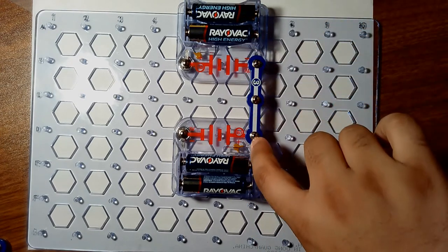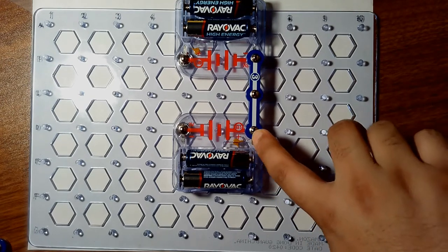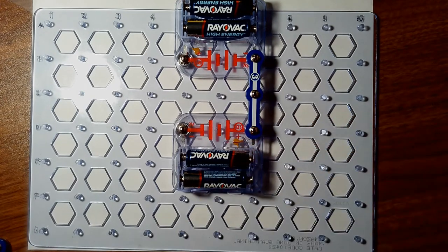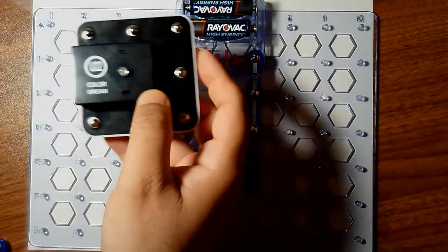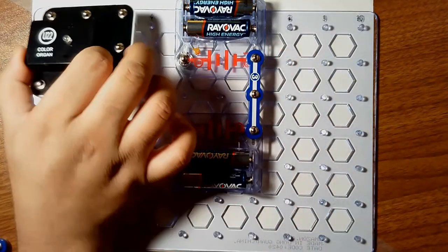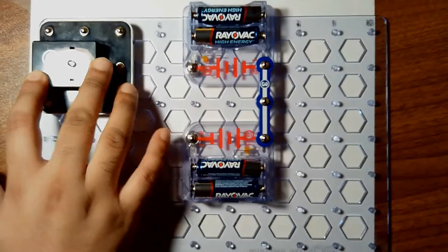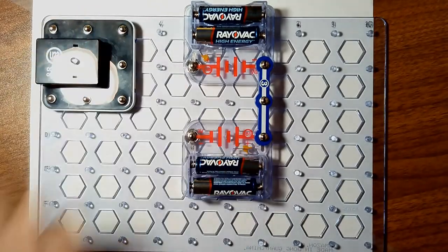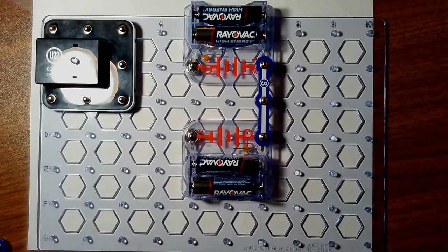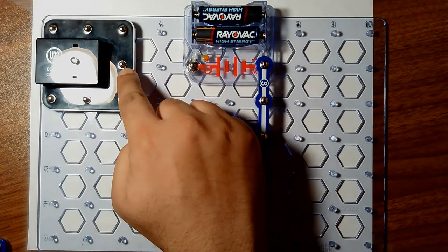Connect these two batteries with this three snap wire, so negative terminal of this battery will go with the positive terminal of the second battery. Now take this color organ and place it like this.